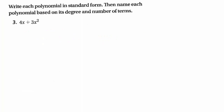Moving on to polynomials. The reason these are called polynomials is because 'poly' means many — there's more than one term, and terms are separated by addition, not multiplication. The 4 and the x are one term; the 3 and x² are one term. To write it in standard form, we put it in descending order: 3x² + 4x.